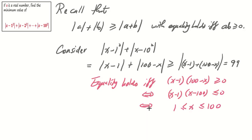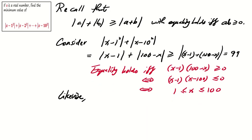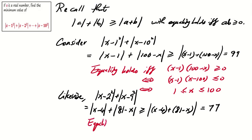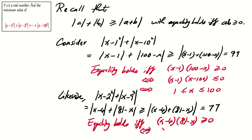We can continue to apply the same method. Likewise, |x - 2| squared plus |x - 9| squared can be written as |x - 4| plus |81 - x|, which is at least |x - 4 + 81 - x|, and it equals 77. The equality holds if and only if (x - 4)(81 - x) ≥ 0, so x is in between 4 and 81.